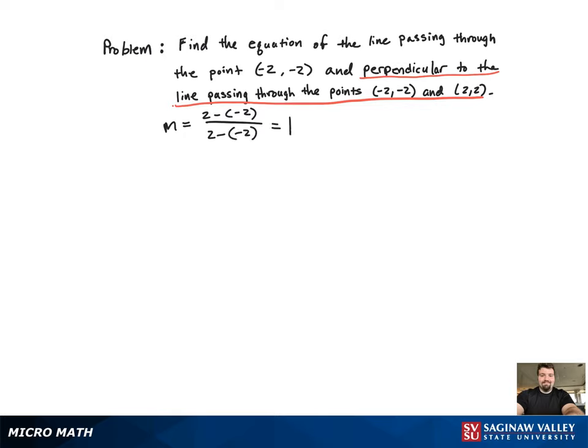Then we find out that that slope is equal to 1. Now our slope has to be the opposite reciprocal because they're perpendicular lines. So ours is going to be -1.